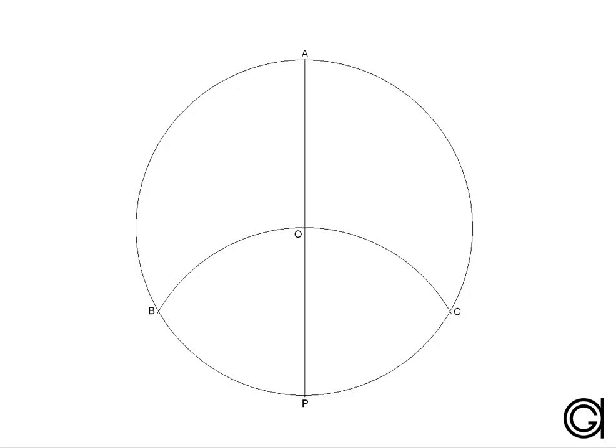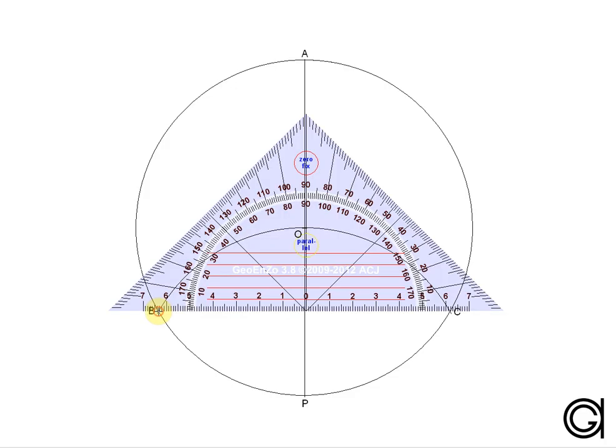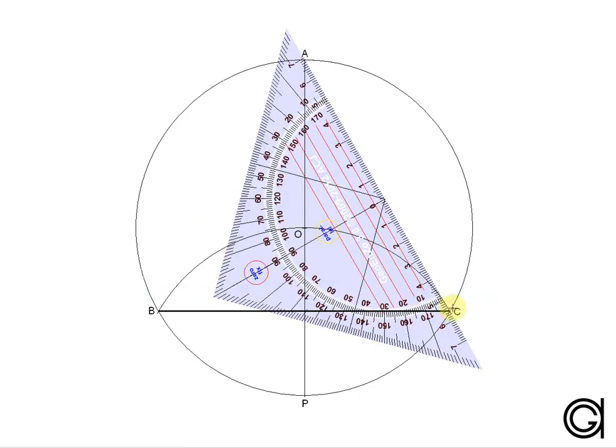So now, finally, we just need to join these vertices. B with C, C with A, and finally A to B.